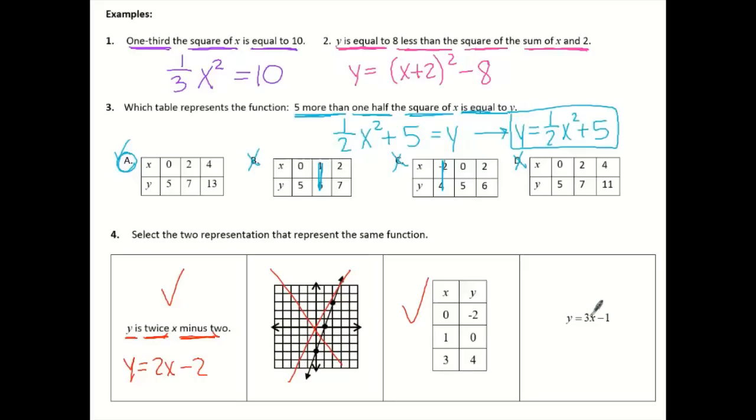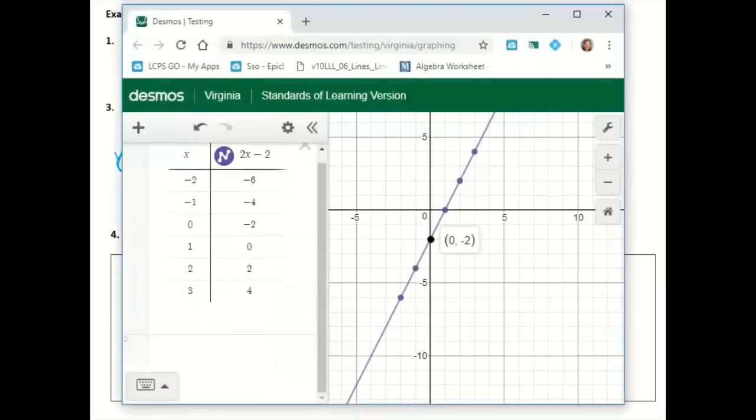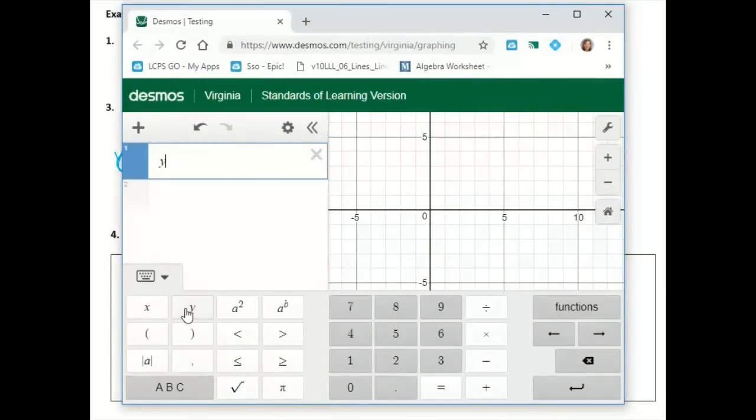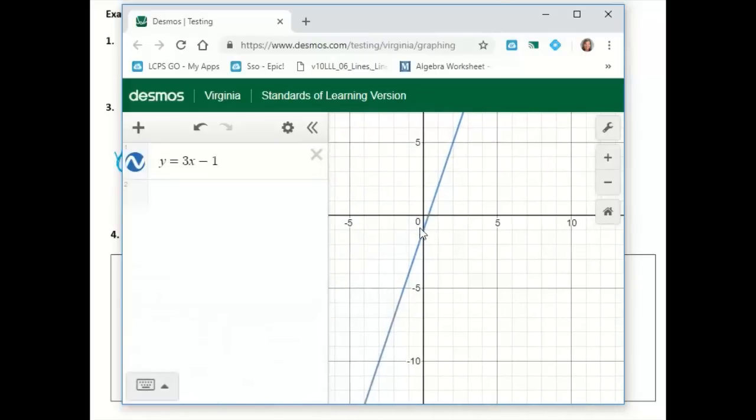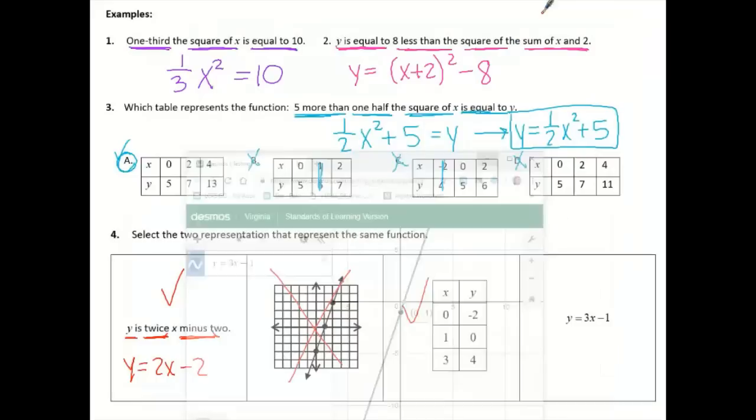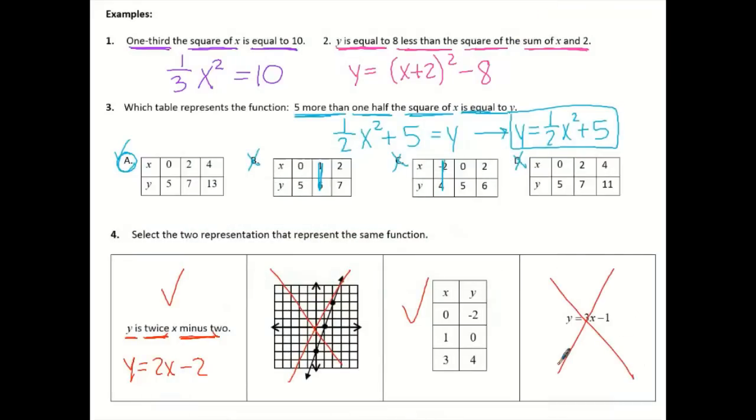And this one here, if I look here with this graph, Y equals 3X minus 1, if I just type it in to see Y equals 3X minus 1. Again, looking at that graph, it does not match that graph. I've got a Y intercept of 3 and a slope of about a third there, up 1. We have a slope of 3 for this one. So that one's not going to match anything either.